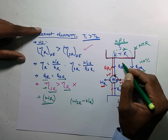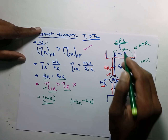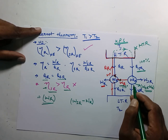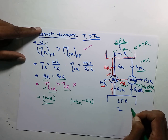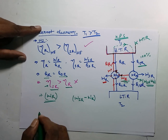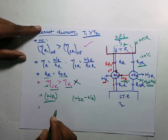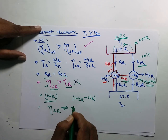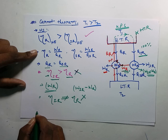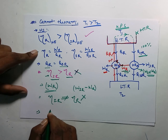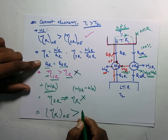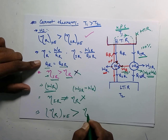This would mean the engine works under one temperature limit, which violates the Kelvin-Planck statement. According to the Kelvin-Planck statement, this is impossible — a heat engine cannot operate under a single temperature reservoir. So we have proved that the assumption is wrong. Additionally, an irreversible heat engine cannot be equal to a reversible heat engine due to irreversibility. So the only true condition is that the efficiency of the reversible heat engine is always greater than the efficiency of the irreversible heat engine.